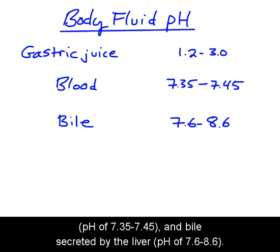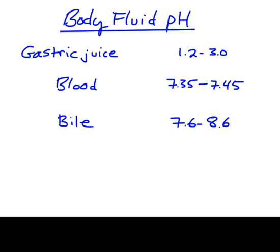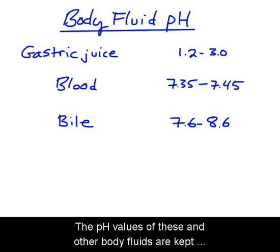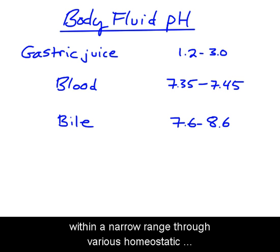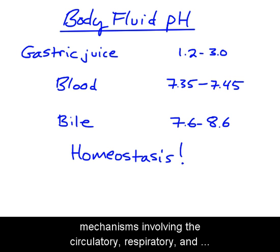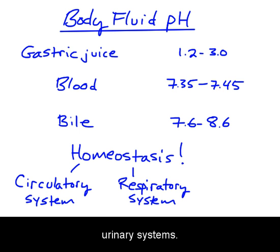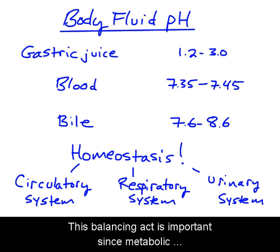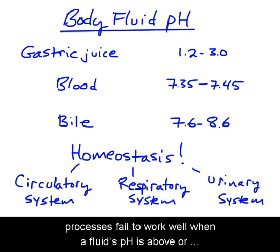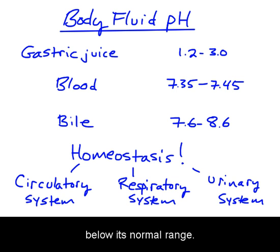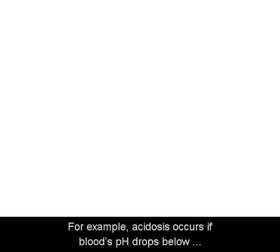The pH of these and other body fluids are kept within a narrow range through various homeostatic mechanisms involving the circulatory, respiratory, and urinary systems. This balancing act is important since metabolic processes fail to work well when a fluid's pH is above or below its normal range.